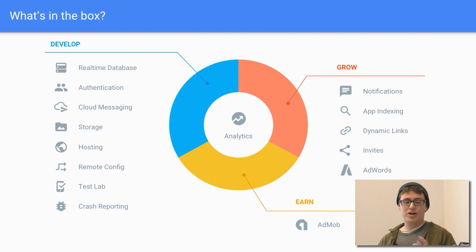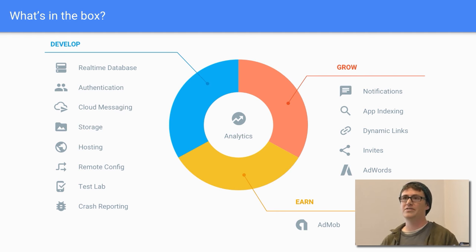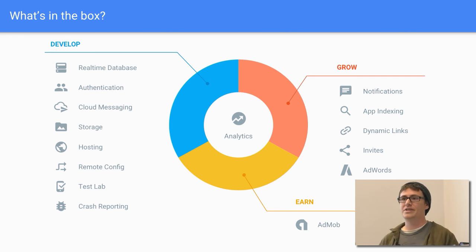They break all of these down into different components. Under develop you have the real-time database, authentication, cloud messaging, and so forth. Grow includes notifications, app indexing, and other things for people to find and install your app. And earn is just ads.